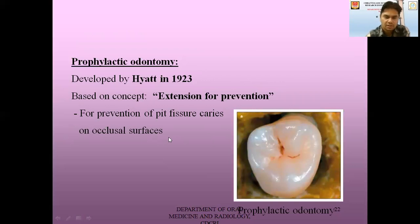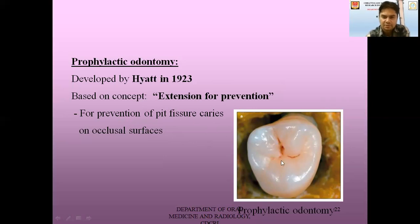Next is prophylactic odontotomy, developed by Hyatt in 1923. It is based on the concept of extension for prevention. For prevention of fissure caries on the occlusal surface, where there is a deep fissure, we use a bur to remove the enamel on the periphery of the deep fissures, making them self-cleansing. Once the deep fissure becomes self-cleansing, food will not stagnate there and there won't be any bacterial acid production, thus caries will not initiate in these areas.